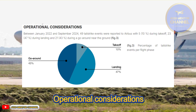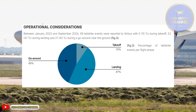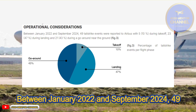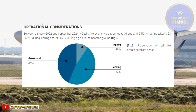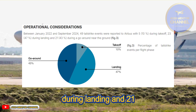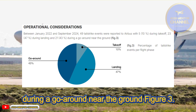Operational considerations: Between January 2022 and September 2024, 49 tail strike events were reported to Airbus — 5 (10%) during takeoff, 23 (47%) during landing, and 21 (43%) during a go-around near the ground.